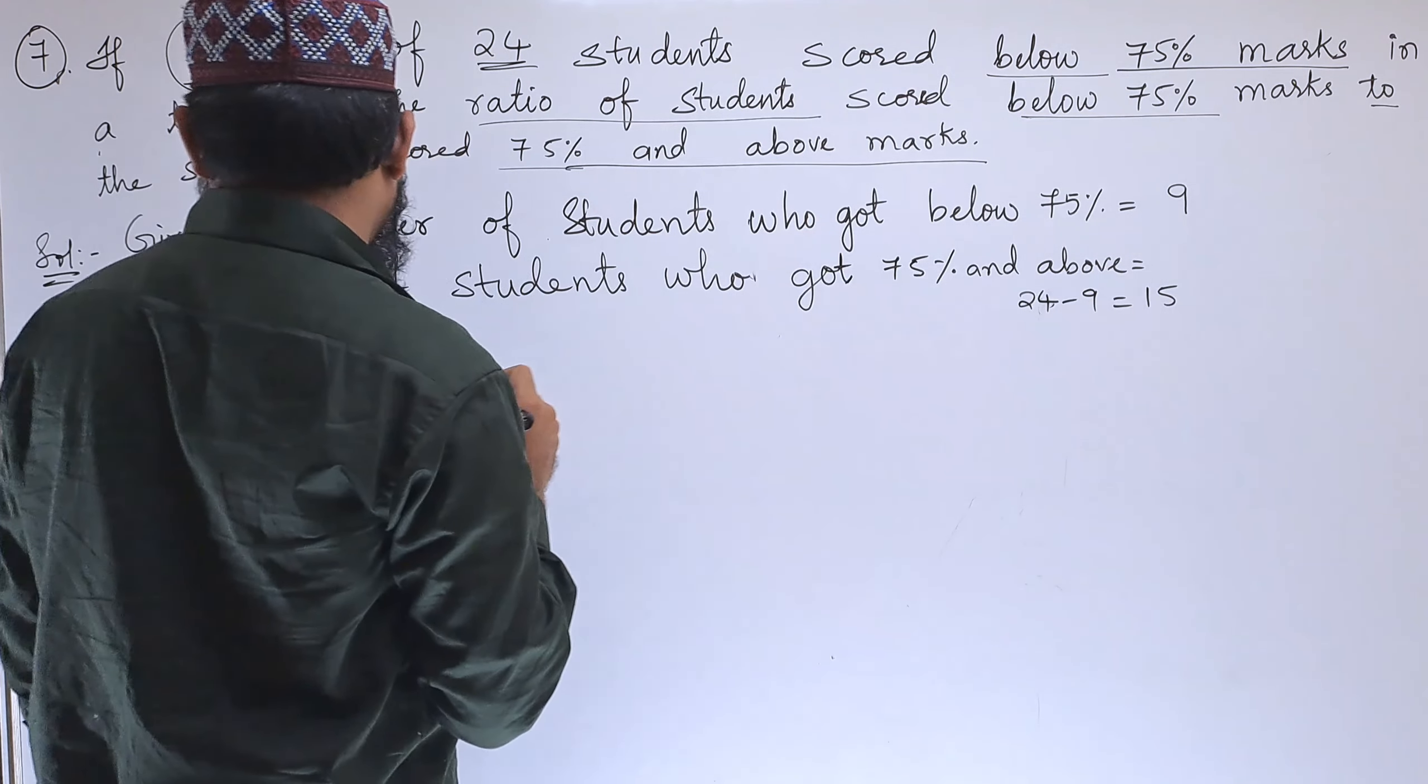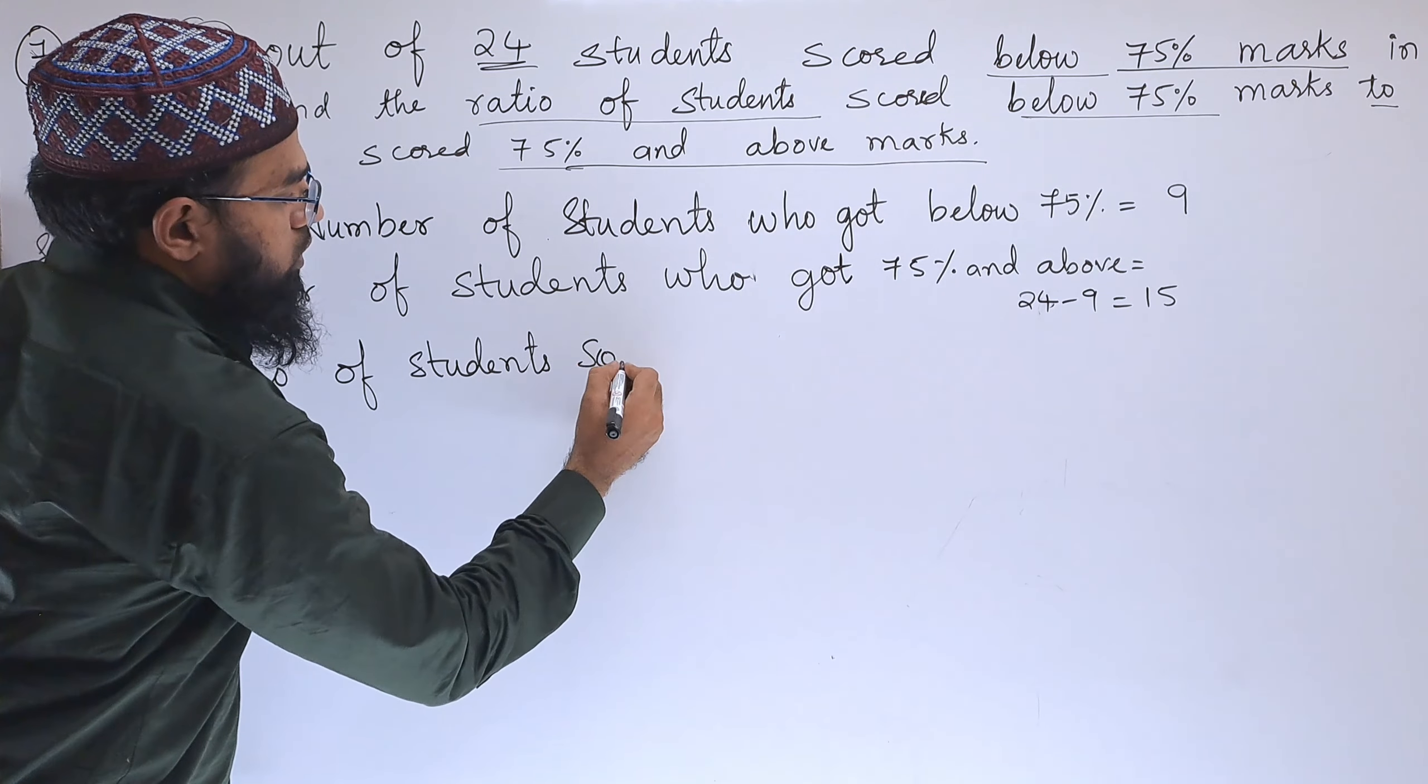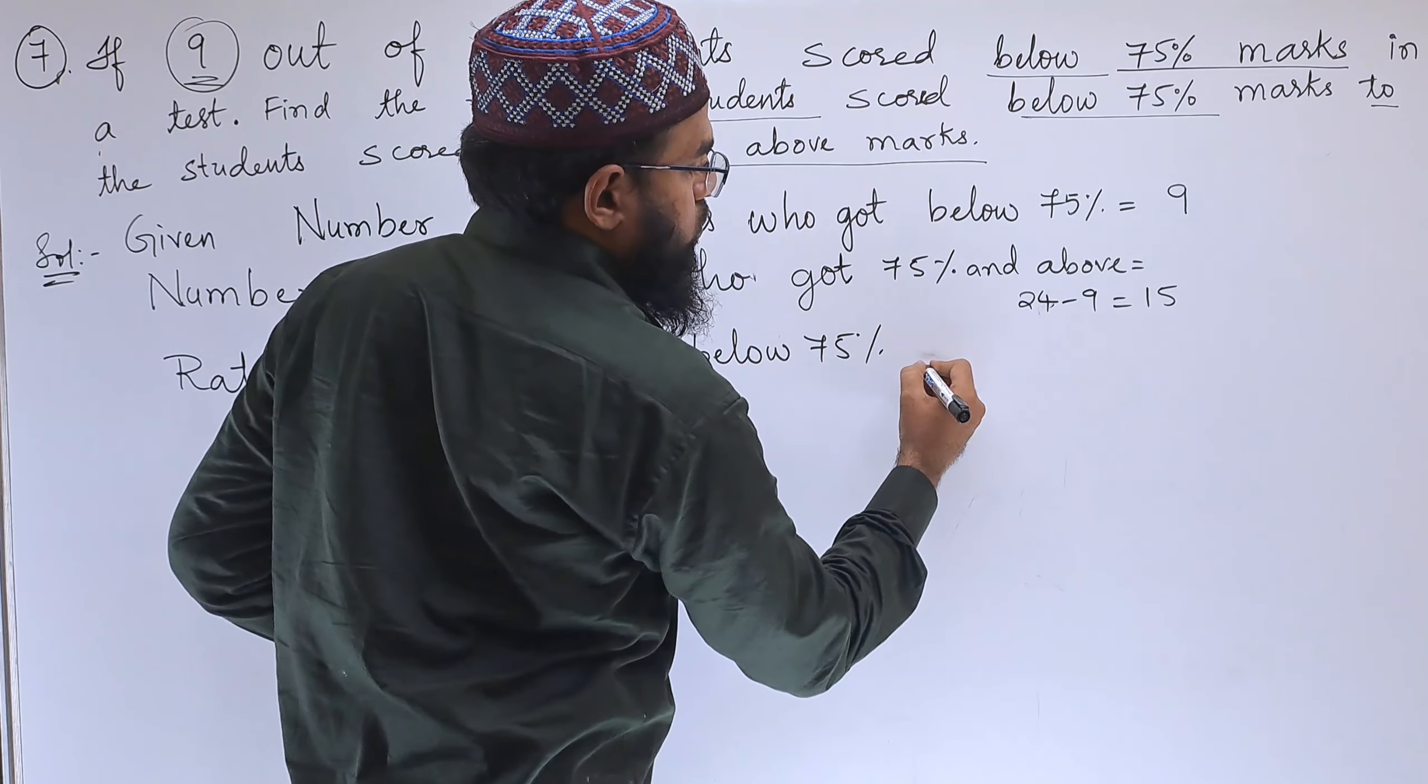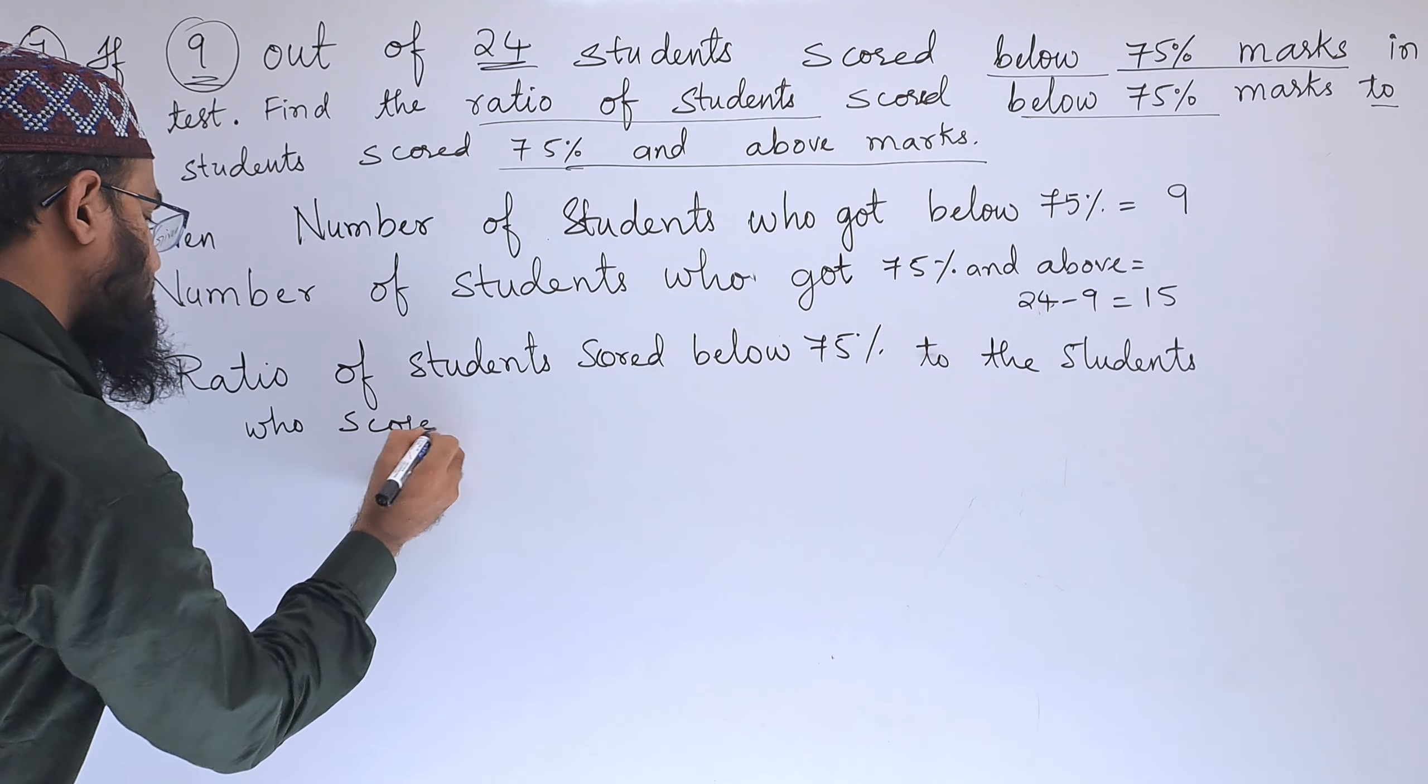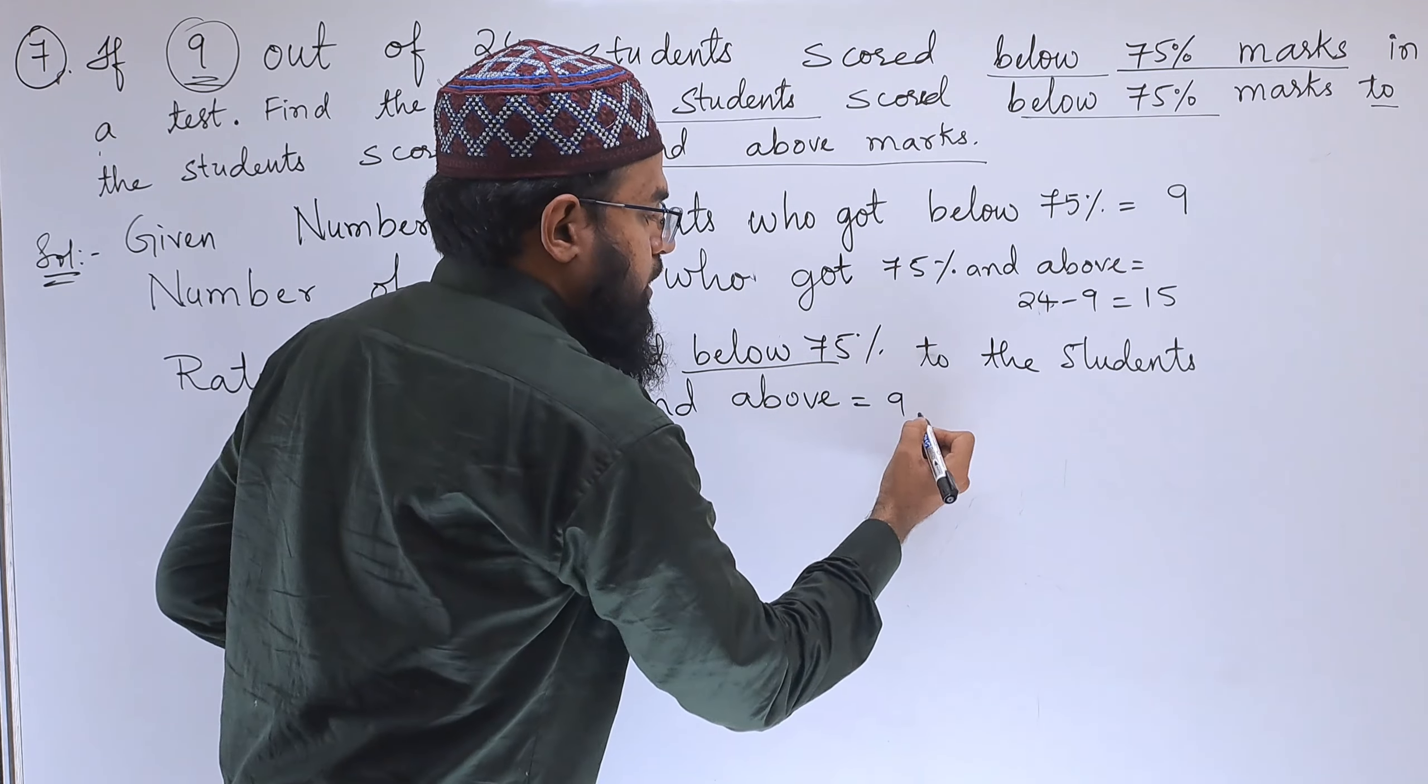Next, we can write the ratio of students below 75 percent to the students who scored 75 percent and above is equal to: below 75 percent is 9 and 75 percent and above is 15.